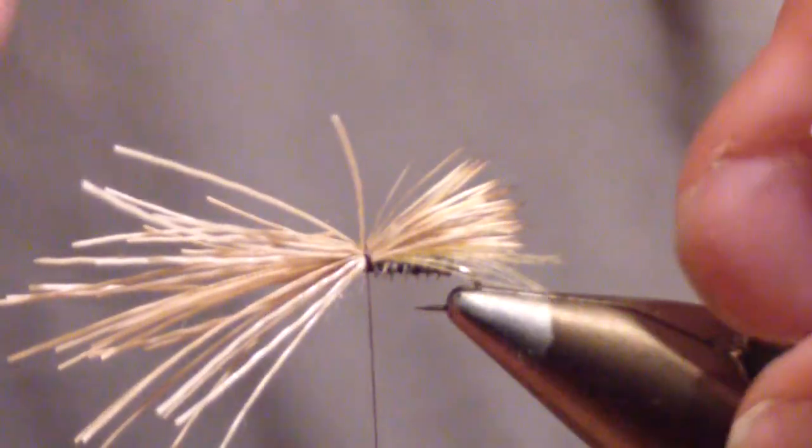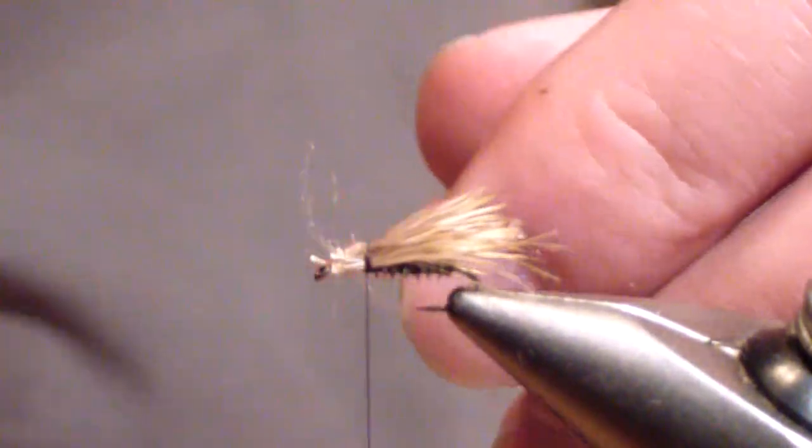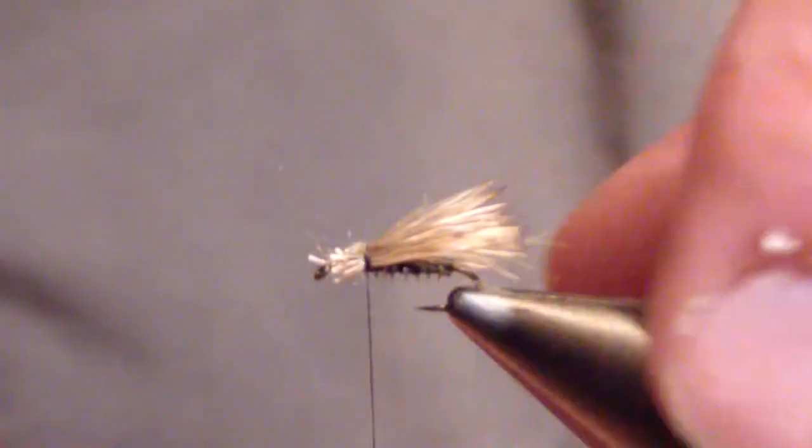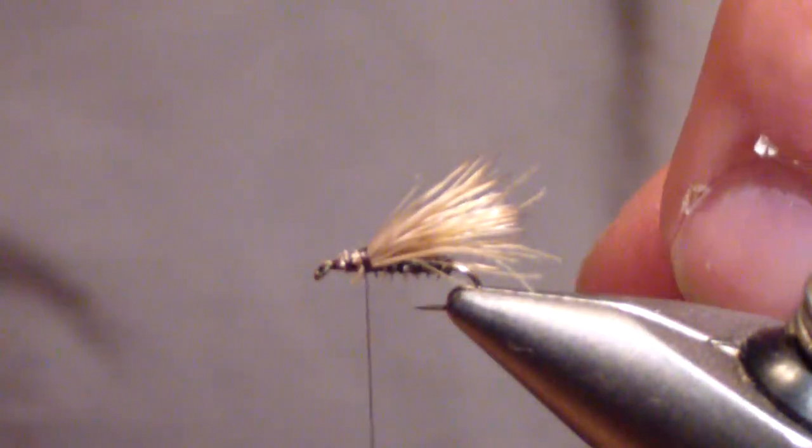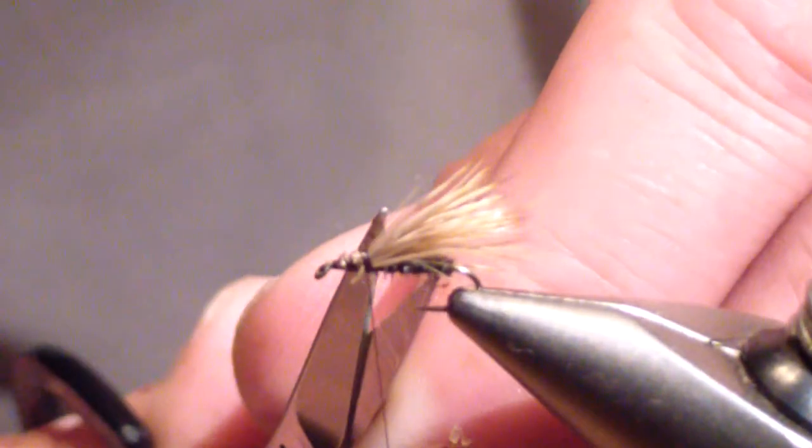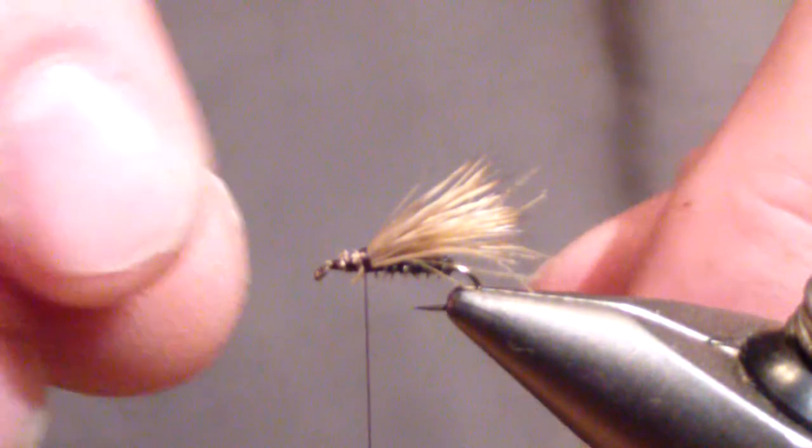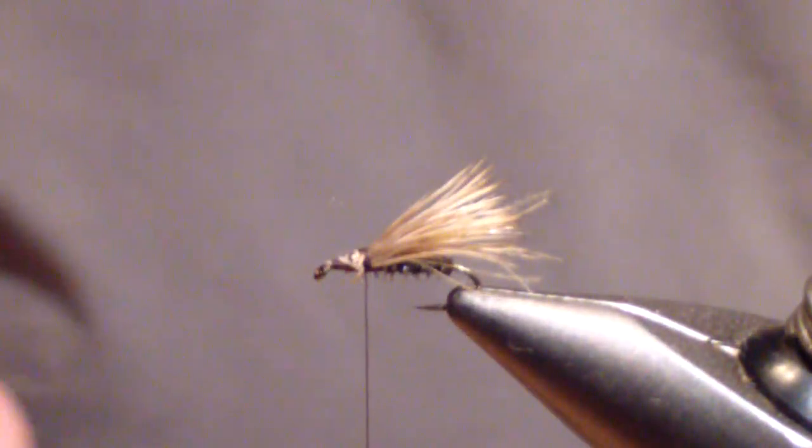You're going to tie it in with tight wraps right off the bat. You're not flaring it right now. Just trying to make sure it stays on top. Then you're going to trim your butts. And then maintaining it where it is, you're going to wrap those butts down, secure that wing in place.